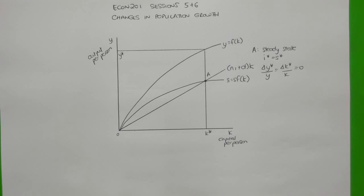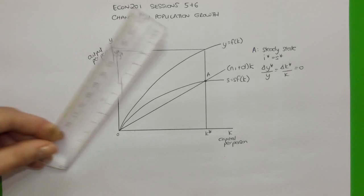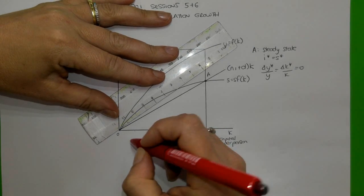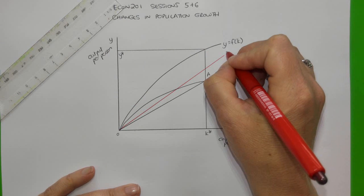We now consider what would happen if there was an increase in the population growth rate. I am specifically working through an increase, but please also figure out in your own time how a decrease in the population growth rate would affect this model. An increase in the population growth rate means that even more investment would be required to keep the capital-to-labor ratios constant at whatever level they are. So we need to demonstrate that more investment is going to be needed than before, and we show that as an upward pivot of the investment requirement line.